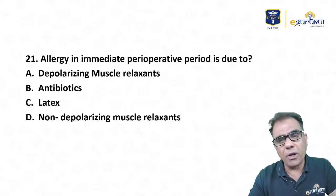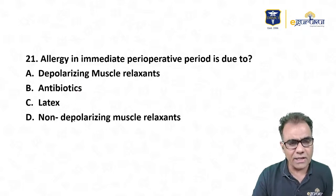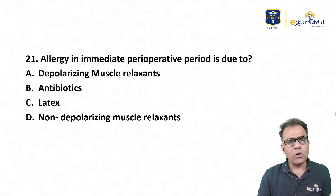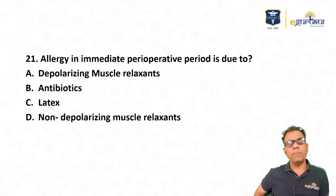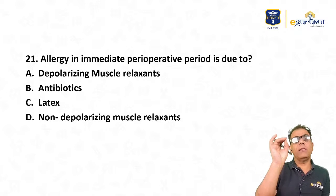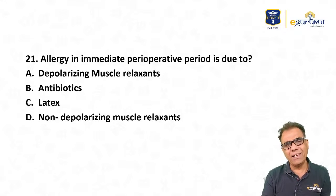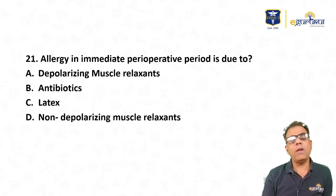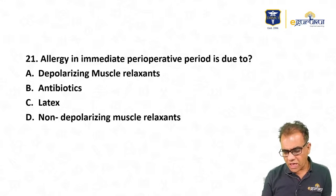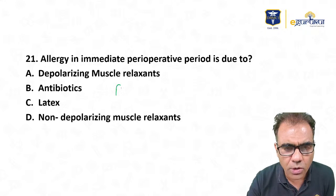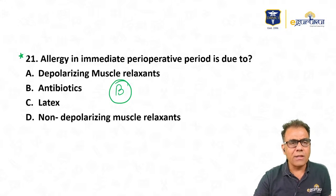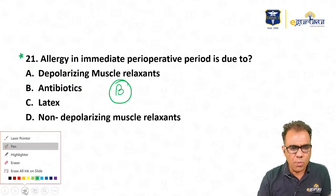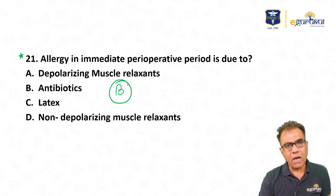Question number 21: Allergy in the immediate perioperative period is most commonly due to — depolarizing muscle relaxant, antibiotic, latex, or non-depolarizing muscle relaxant? Using green pen here because all books state muscle relaxants as the most common cause of anaphylaxis in perioperative period — that was true until recently. But a recent British study says antibiotics are now the most important cause of anaphylaxis in perioperative period. MCQ books may still say muscle relaxants, but the answer is now antibiotics.